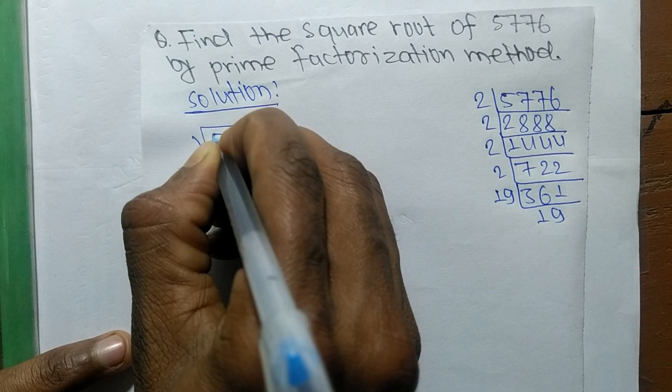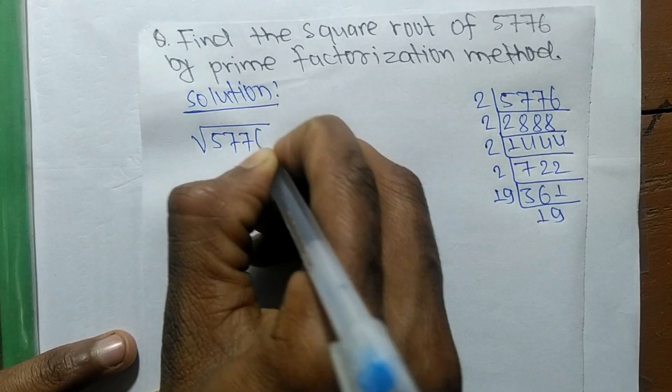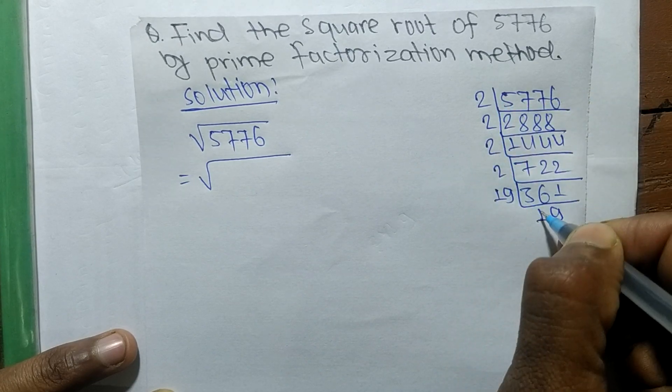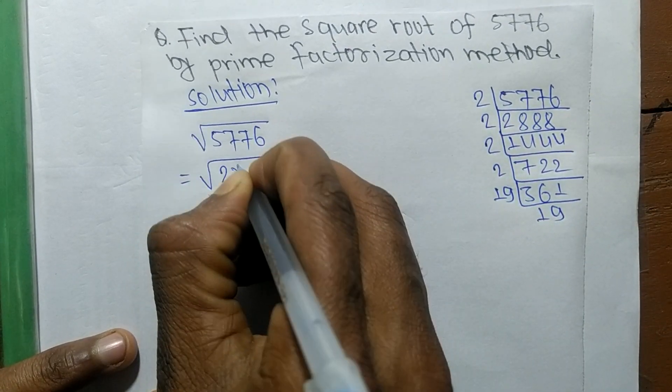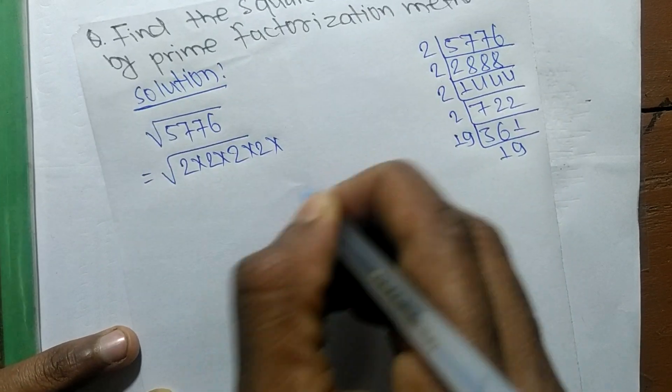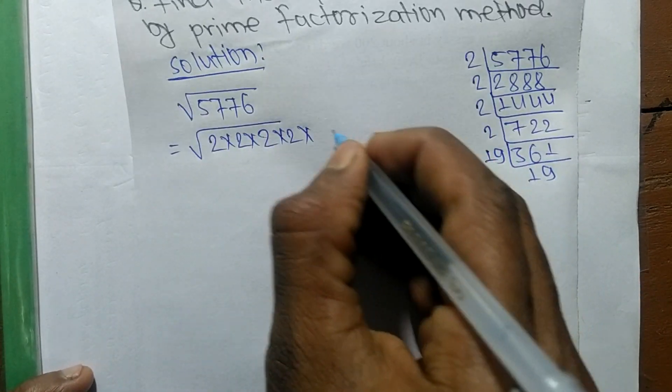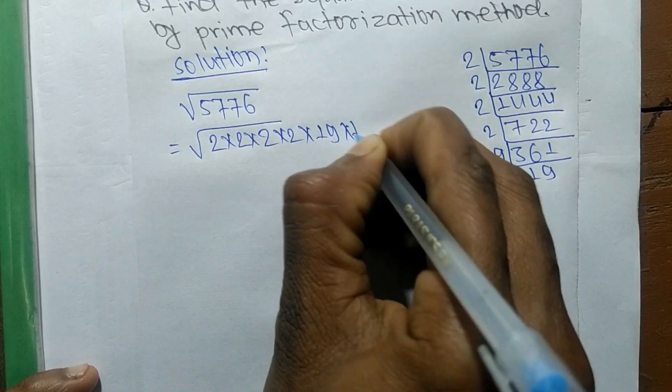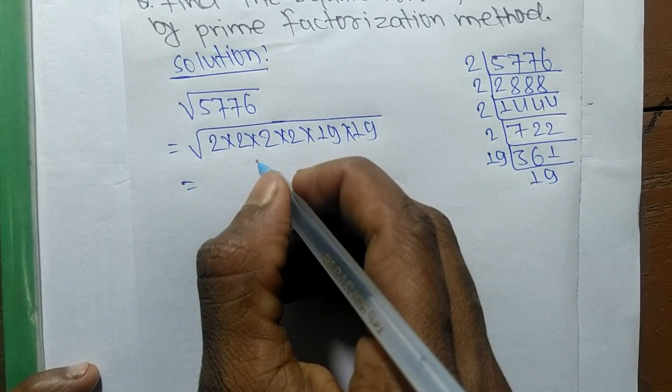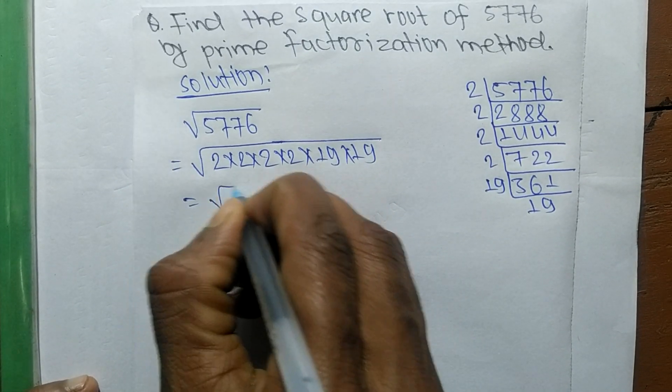The square root of 5776 - now from the prime factors we can write 2 × 2, 2 × 2, and 19 × 19. So we are finding a square root, so we make the square of all these numbers.